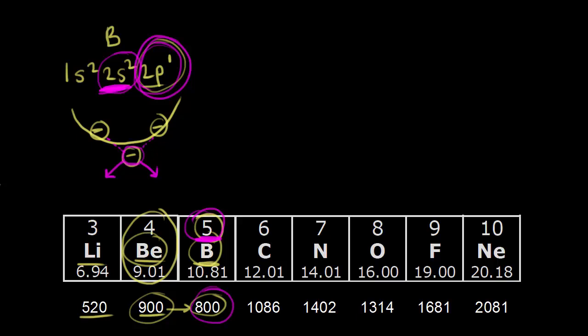From boron to carbon and carbon to nitrogen we see increases in ionization energy, attributed to increased effective nuclear charge. But going from nitrogen to oxygen there's a slight decrease again — from about 1,400 kJ/mol down to about 1,300 kJ/mol for oxygen.